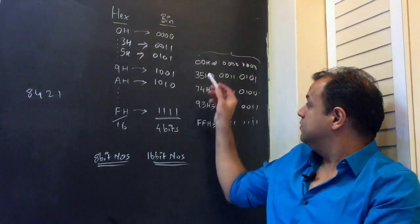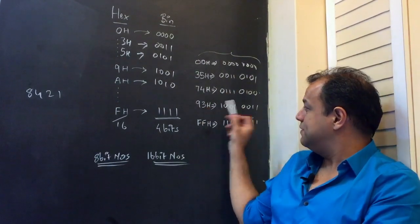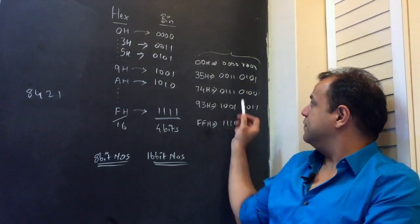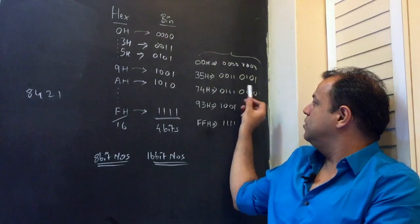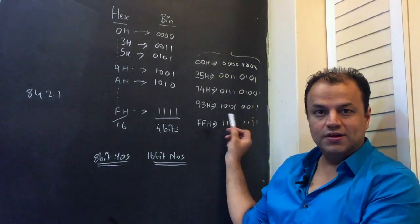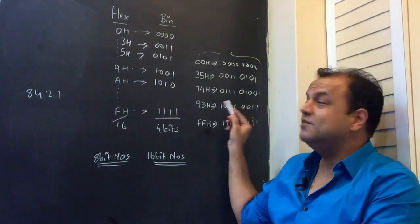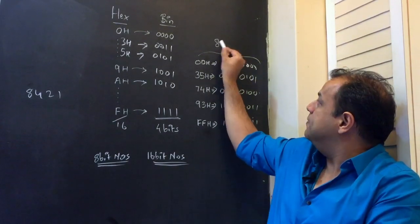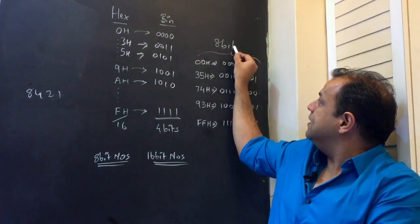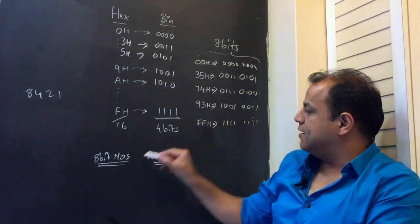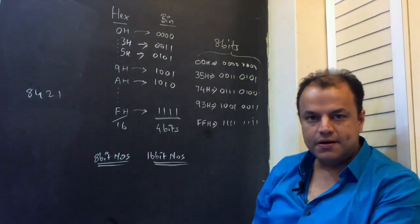Now look at this: 35, 74, 93, FF — they all totally required 8 bits. That is why they are called 8-bit numbers.